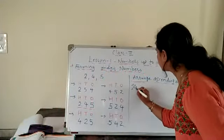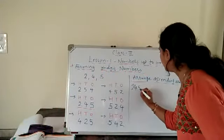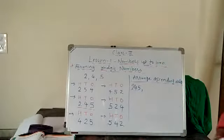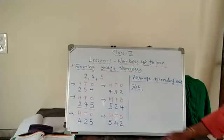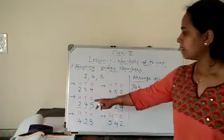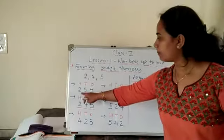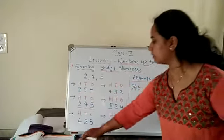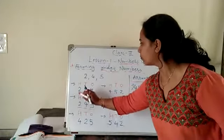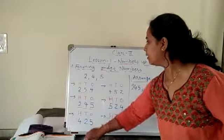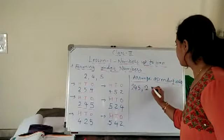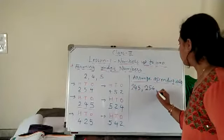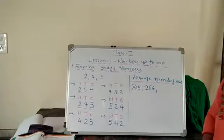So you have to write the 1st number as 245. 1st is done. Then the 2nd also has 2 in the 100s place — the next smallest with 2 in 100s place. So you have to write 254.